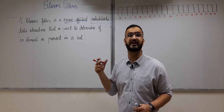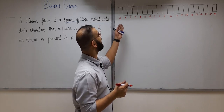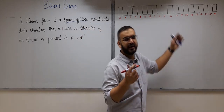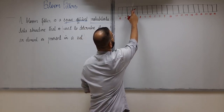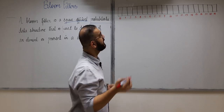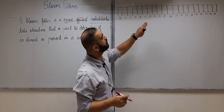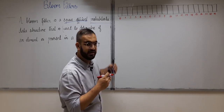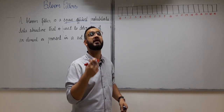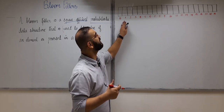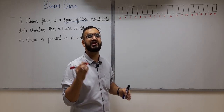Understanding the structure of a bloom filter is very easy because a bloom filter is actually an array — specifically a bit array. Each index of this array will contain either zero or one. Since our bloom filter is initially empty with no elements inserted yet, we will insert words into it one by one to perform search operations efficiently.